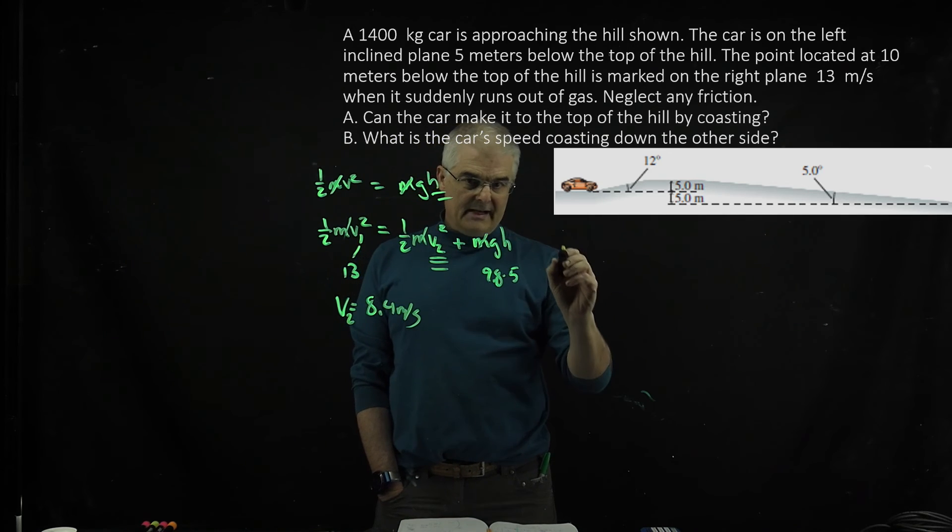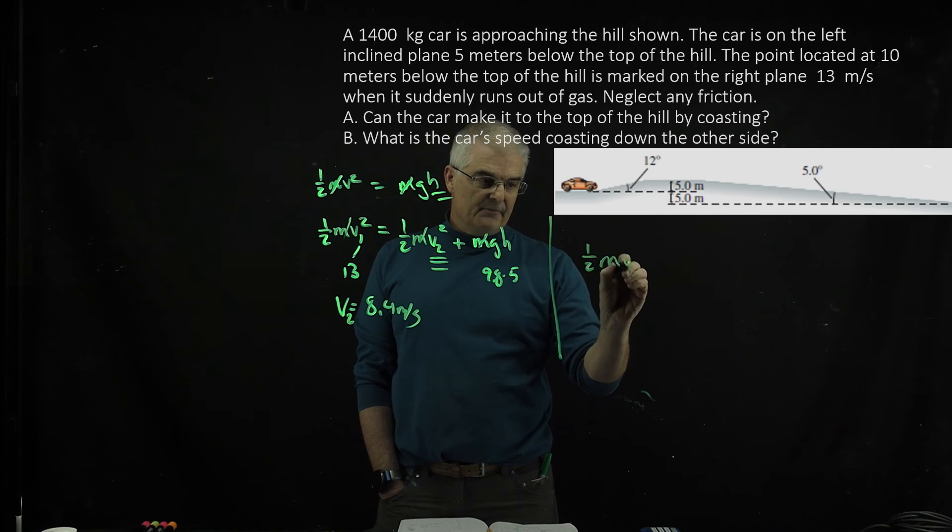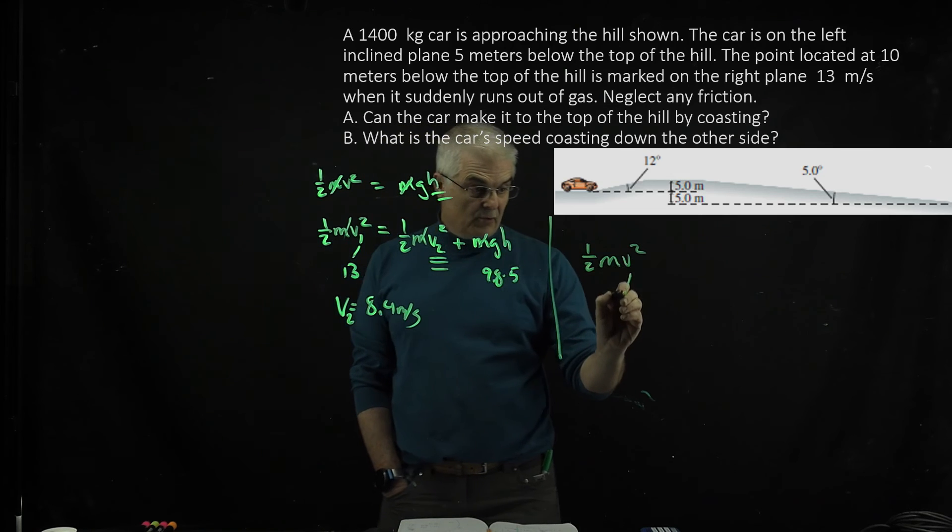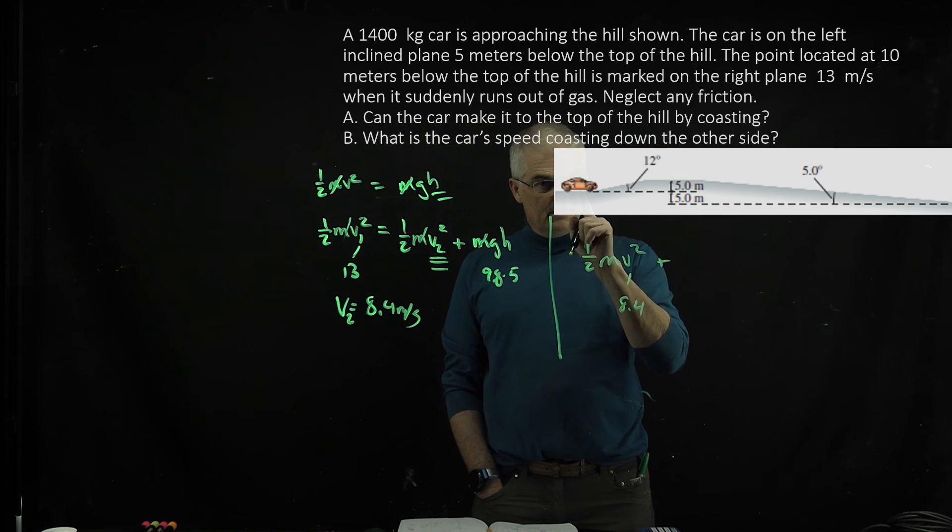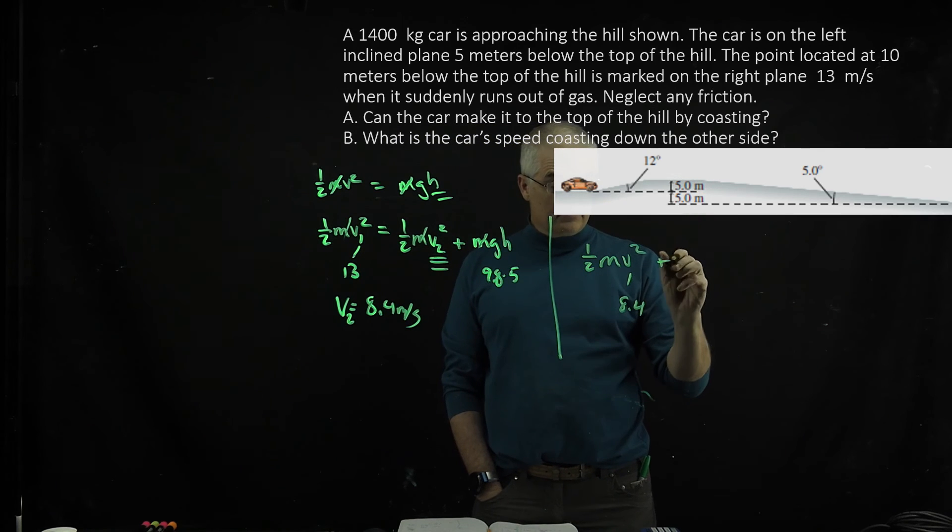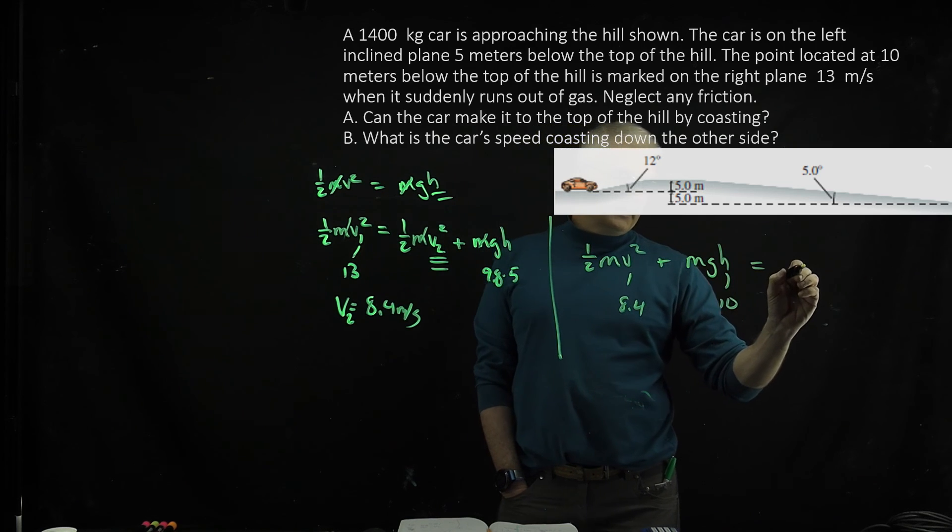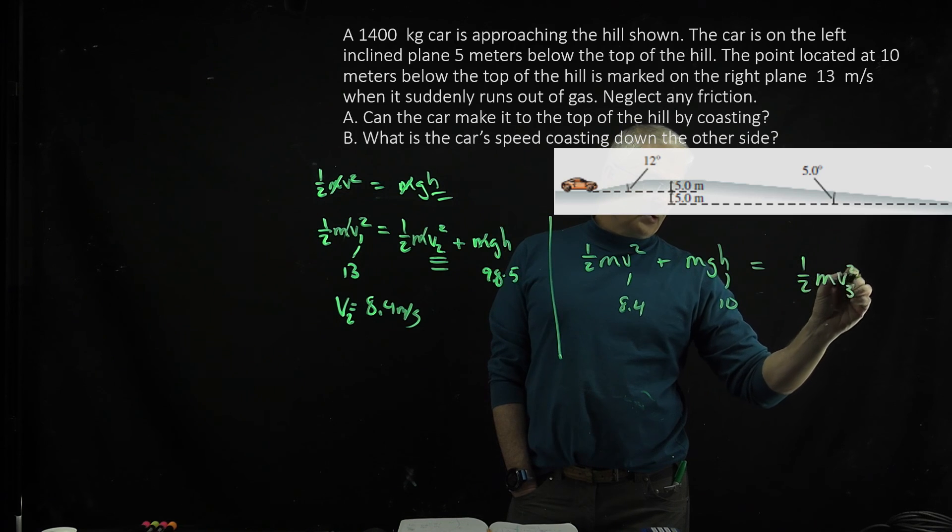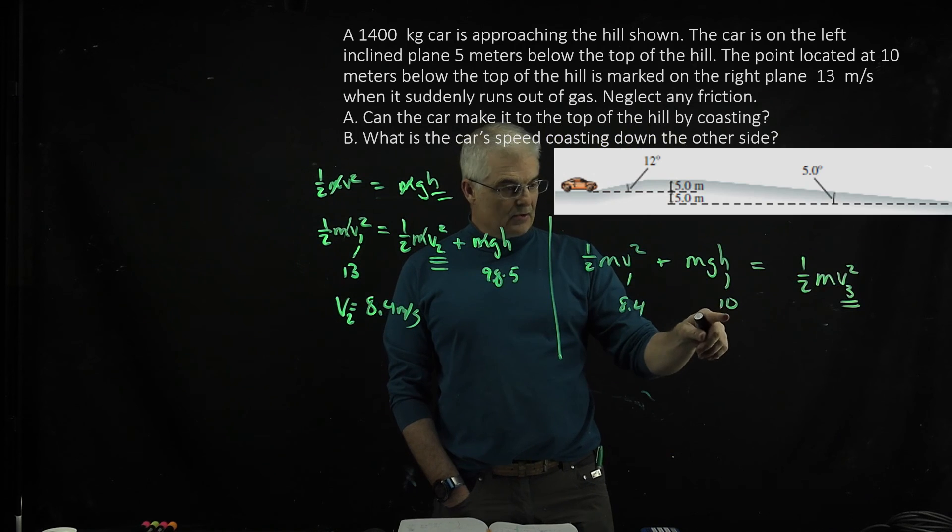So I had to do another set of equations. One-half mv squared, where this is now 8.4, plus the energy of being on a 10-meter tall hill, mgh where h is now 10. I'm going to set that equal to one-half mv3 squared - his final speed at the bottom of the hill. You're going to solve for this. You know all the other numbers.